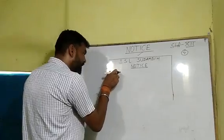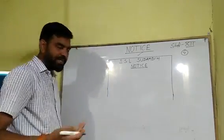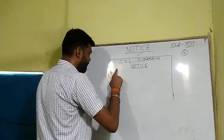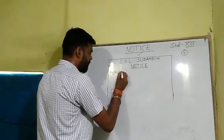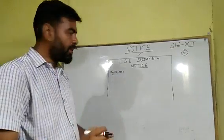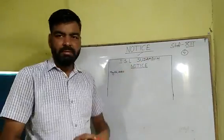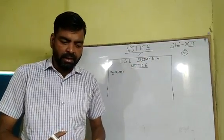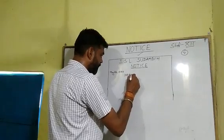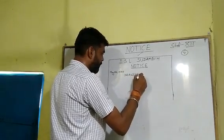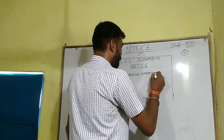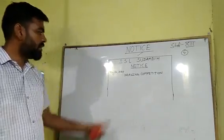There is a part for the date, and the date must go here. Suppose today's date is 26th of May — you can write May 26th, 2020. This is a very important part. Then you will move to the title of the notice — what you are going to write the notice about. For example, ISL Sudamdi is organizing an inter-school drawing competition.